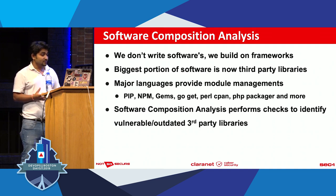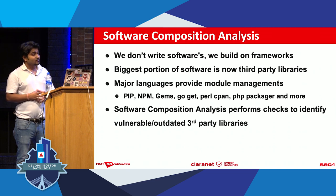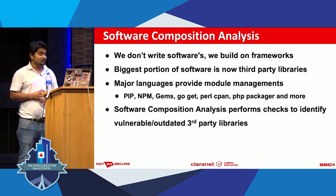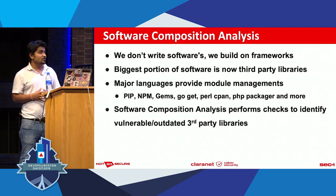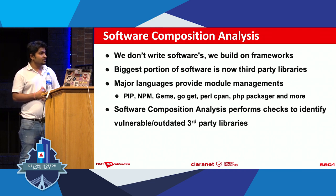Software composition analysis is an interesting aspect. Effectively we write maybe 10–20% of our software and all other parts are imported references and third-party modules. These are generally the major factor in attacks and vulnerabilities. If you're using open source libraries that are outdated, you need checks to figure out which library versions are vulnerable so you can eliminate those vulnerabilities. There are checks available for all major languages that use packages.